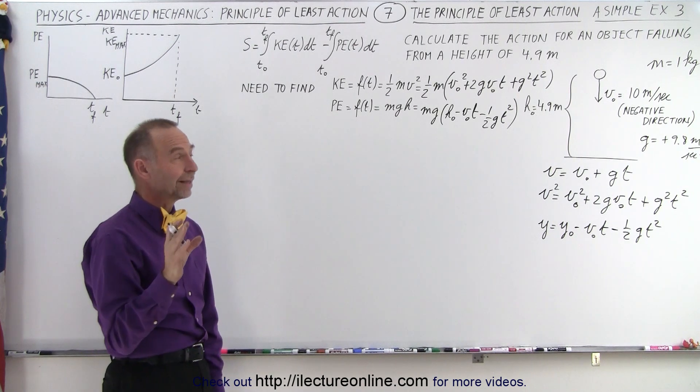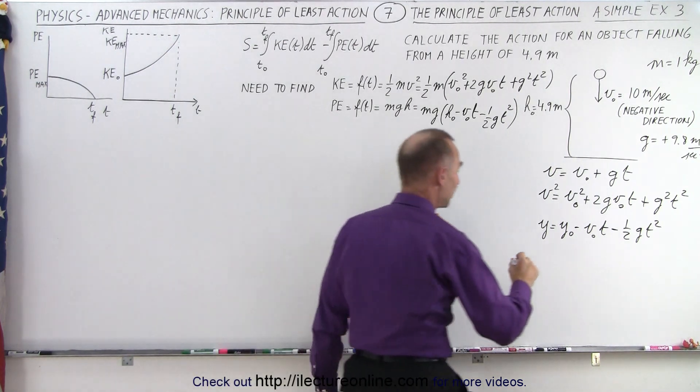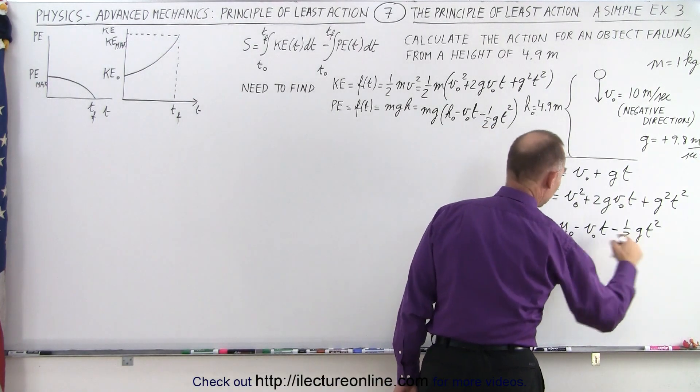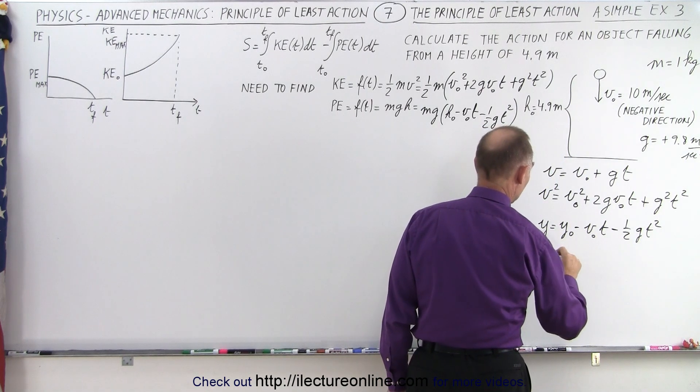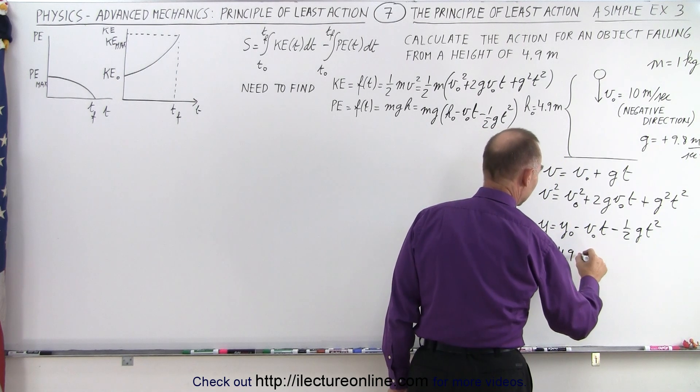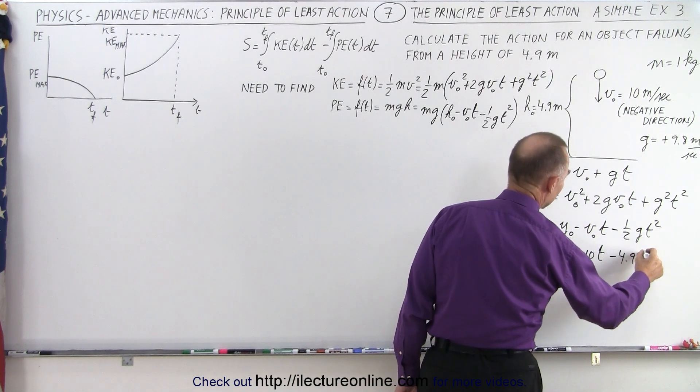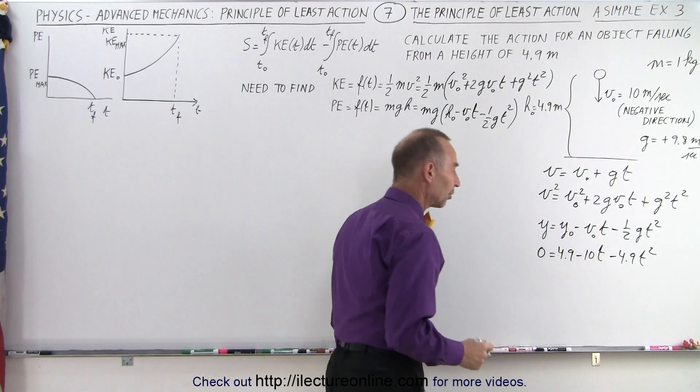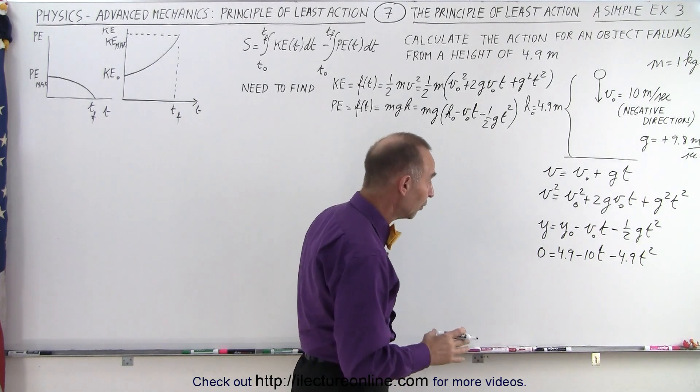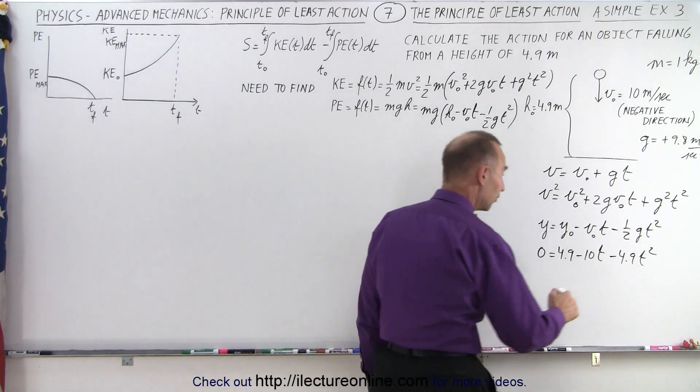And so that gives us the potential energy. Now we also need to find time in the air. Time in the air can be found by equating this. So we have final height is 0, initial height is 4.9, this is minus 10 times t, and minus 4.9 t squared. And that's a quadratic equation that we have to solve to solve for t.